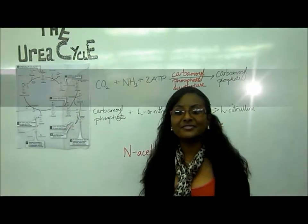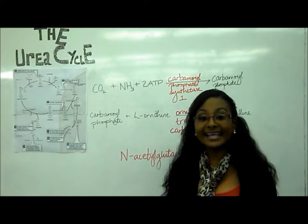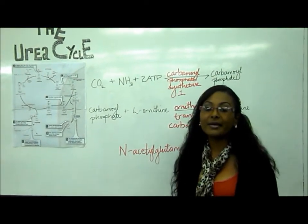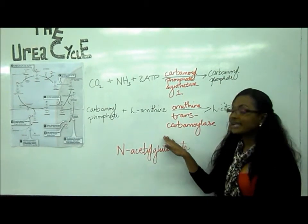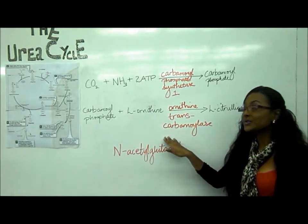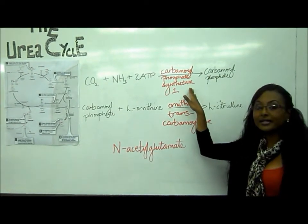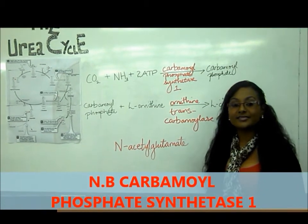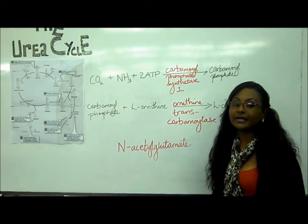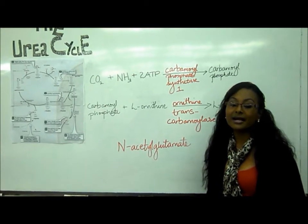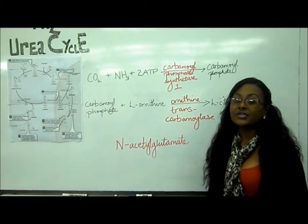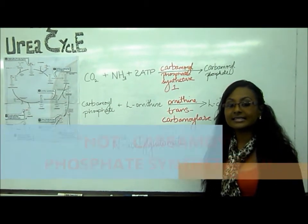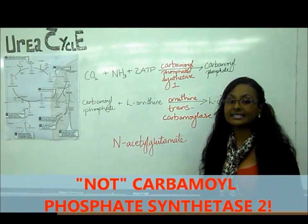Hey guys! My name is Farren Filofana. I hope you are all ready and excited to continue the urea cycle. Continuing from where my colleague left off, the enzyme that catalyzes this reaction is called carbamoyl phosphate synthetase 1. Remember to put the 1, because there is another enzyme called carbamoyl phosphate synthetase 2 which does not take part in the urea cycle. It is critical that you differentiate between carbamoyl phosphate synthetase 1 and carbamoyl phosphate synthetase 2.